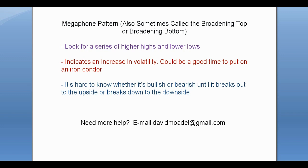What you want to look for is a series of higher highs and lower lows. This pattern indicates an increase in volatility, so it could be a good time to put on an iron condor — you've got volatility increasing in both directions, the upside and the downside, and that could be a good time to capitalize on that increase in volatility.